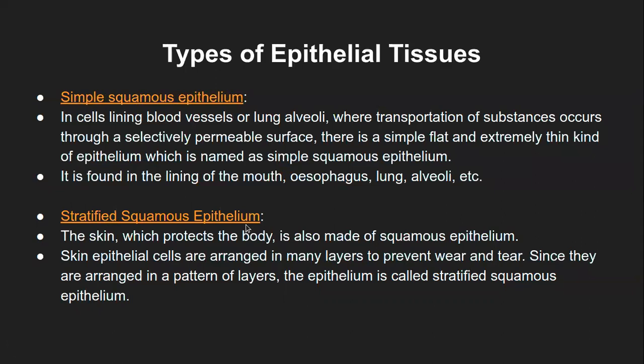Stratified squamous epithelium consists of different layers of squamous epithelium present at different locations — for example, skin, which is one of the major defense mechanisms of the whole body. The skin is present in different layers. They are arranged in many layers to prevent wear and tear, so that if there is an external injury on the skin, there is more protection. That's why the skin layer is much thicker than the internal epithelial layers — that is your stratified squamous epithelium.